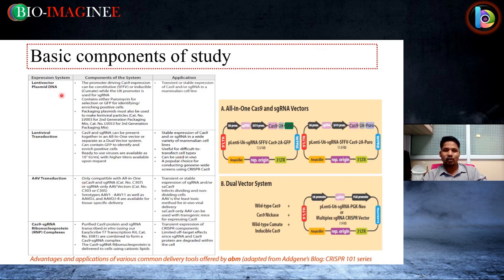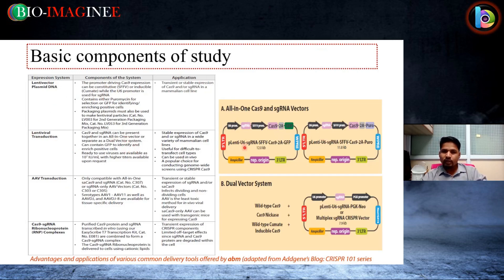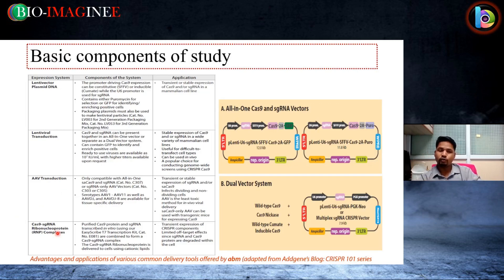In the different expression systems: lentiviral vector plasmid DNA uses a promoter driving Cas9 expression, which can be constitutive or inducible, while the U6 promoter is used for single guide RNA. It can generate both transient and stable expression. Lentiviral transduction allows Cas9 and single guide RNA to be present together in an all-in-one vector. AAV transduction is compatible only with the all-in-one vector, not with dual-vector systems. Dual-vector systems are useful for multiplex applications — when you want two different kinds of mutations, insertions, or deletions.